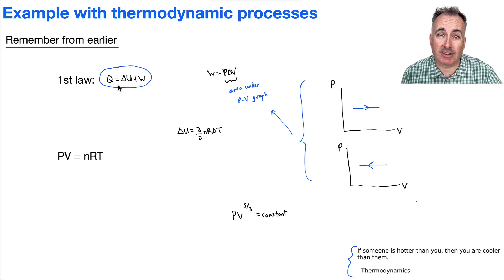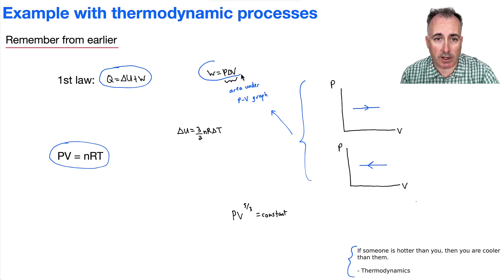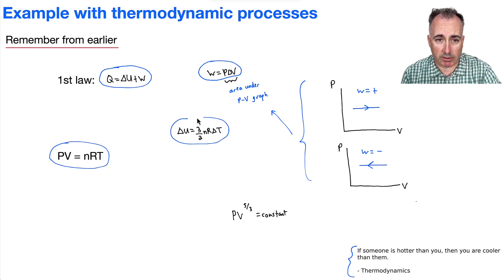So first law is delta U plus W, that's Q. We have PV equals nRT. We have this equation here for work done, which is P delta V, which means it's the area under a PV graph. We also have this equation here, delta U equals 3 halves nR delta T. It tells us the temperature is related to internal energy. And finally, we have this new one then, that PV to the 5 thirds is constant.